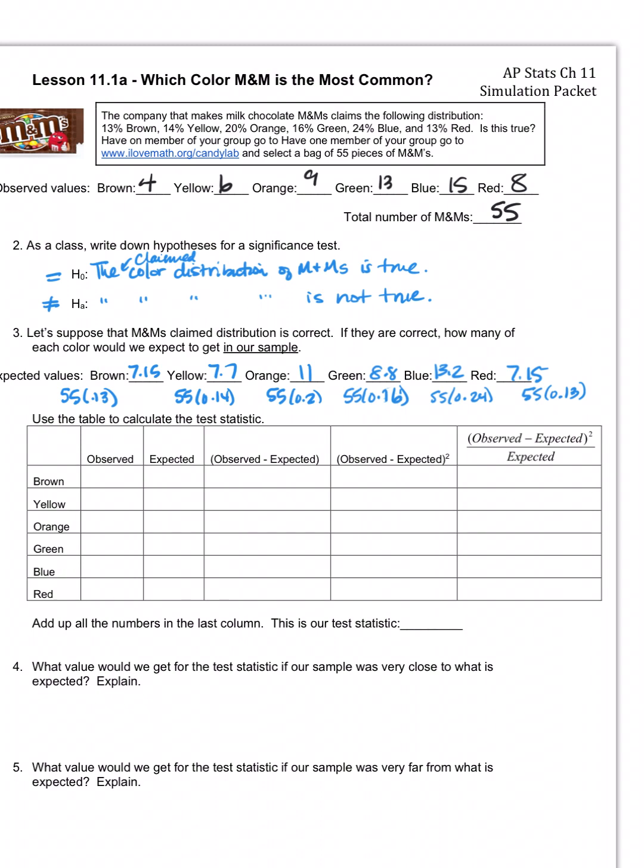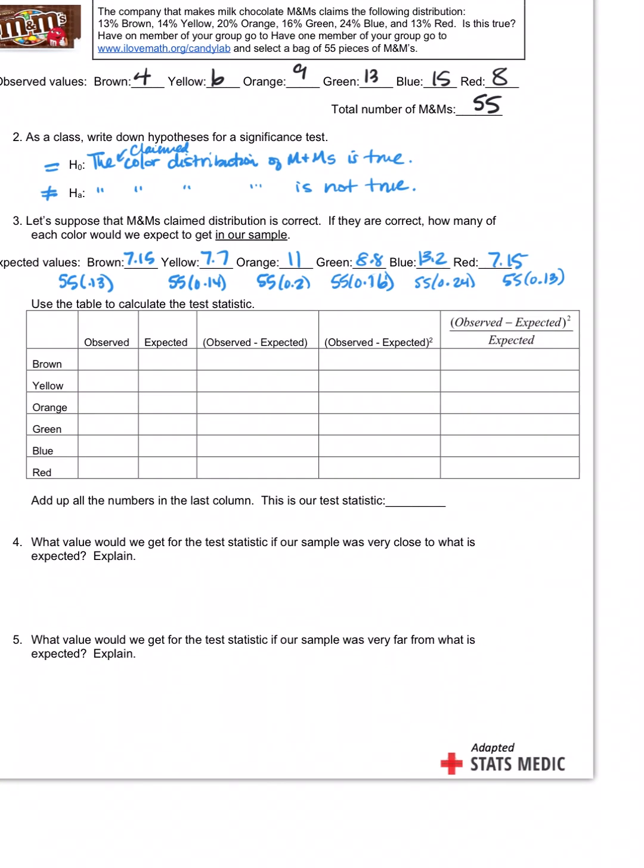These are what we call our expected counts, what we would have expected to see if the claims were true. Now this table down here is kind of a monster, and it's the only time you're going to have to do it by hand. But I want you to take some appreciation for what the equation is going to do for us, and the calculator.